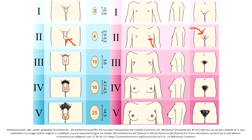Stage 3 is characterized by coarsening of the pubic hair, penile lengthening, and breast enlargement. In stage 4, coarse pubic hair covers the whole pubis but does not extend to the inner thighs. The penis widens in boys and the areolae raise in girls.